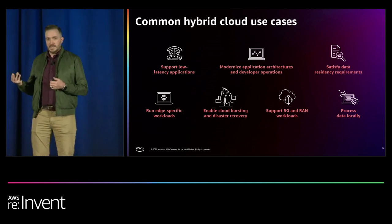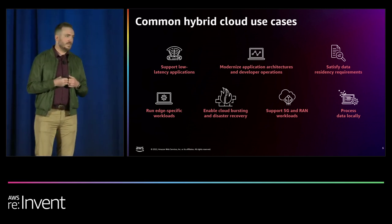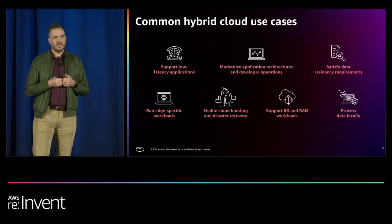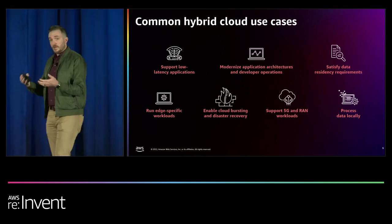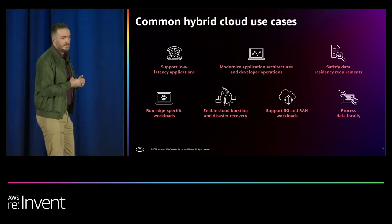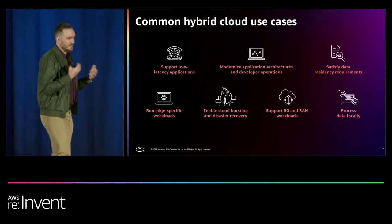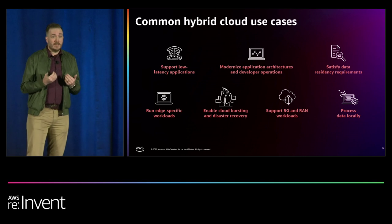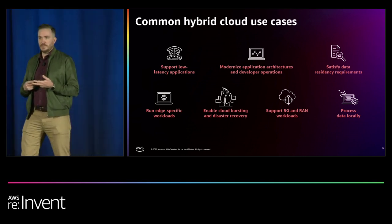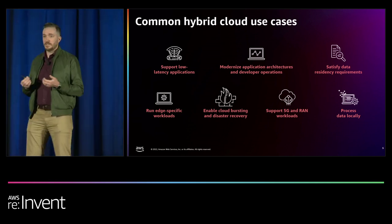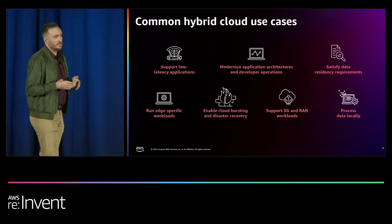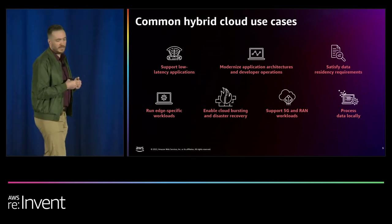The third use case is data residency requirements. We see this a lot with financial institutions, and also with insurance, especially in Europe or other heavily regulated geographies. Customers have a reason to keep their data on-prem — it might be a law, it might be an internal policy. They want to keep customer data or their own data on-prem in their own data center.